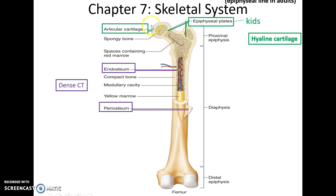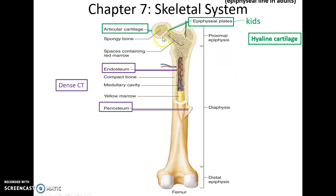At the ends of the bone where the bones are smooth and form joints is the articular cartilage, which is hyaline cartilage. Children will have epiphyseal plates, which are also made of hyaline cartilage — that is where bone growth in length occurs.